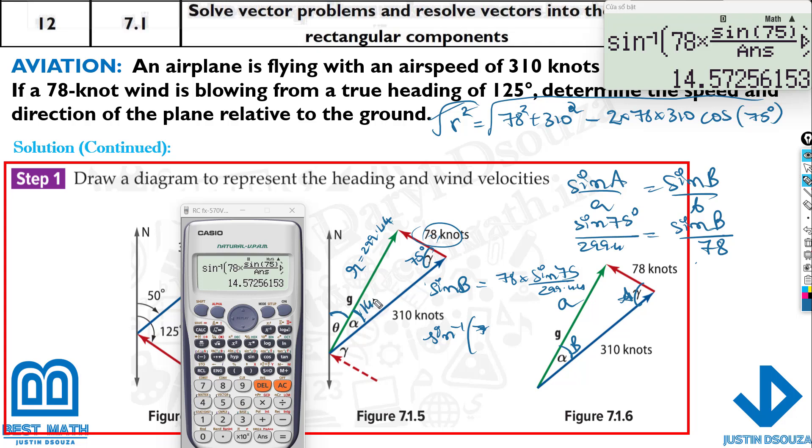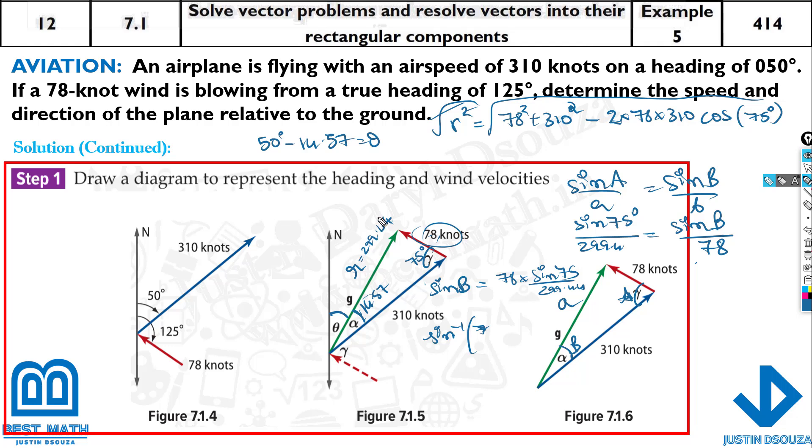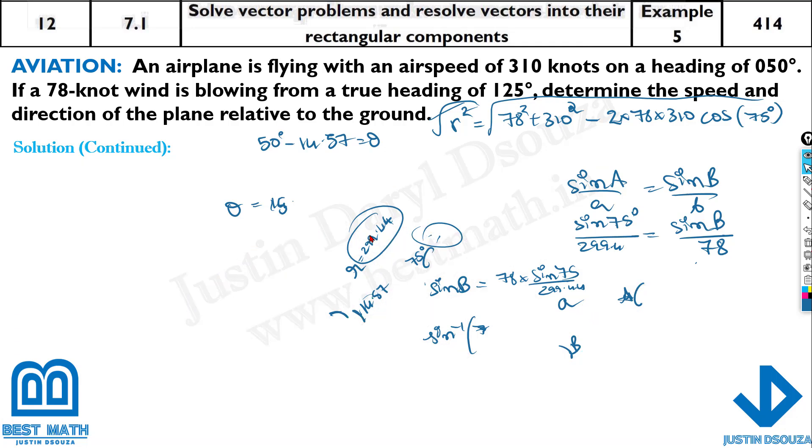Here this angle is 14.57. What is theta then? The total is 50. 50 degrees minus 14.57 will give you theta because the total is 50. Just do 50 minus 14.57. The answer is 35.42. So here the speed is 299.44, the direction is 35.43.